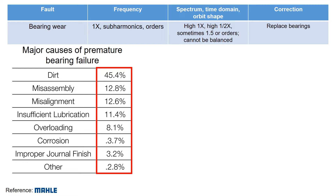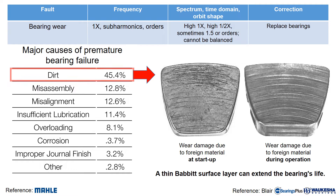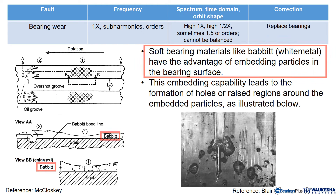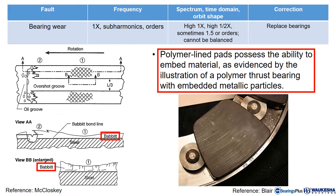Here is a list of key factors contributing to premature bearing failure. The primary culprit is dirt, which causes wear damage inside the bearing. The figures on the right show the wear damage due to dirt. In such cases, a thin BABBIT surface layer can extend the bearing life. Soft bearing materials like BABBIT have the advantage of embedding particles in the bearing surface, leading to the formation of holes or raised regions around the embedded particles. Polymer line pads possess the ability to embed material, as evidenced by the illustration of the polymer thrust bearing with embedded metallic particles.